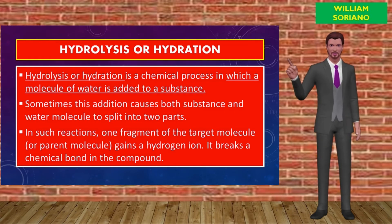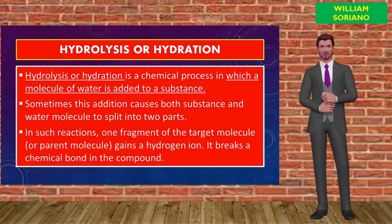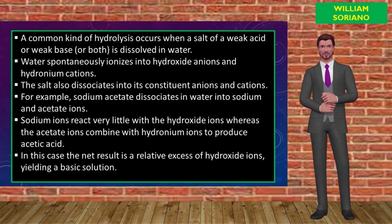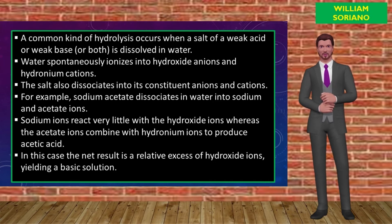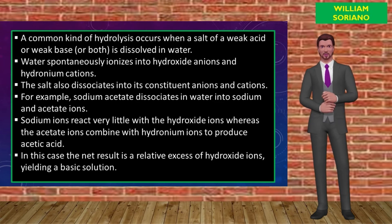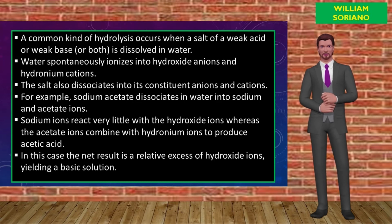Hydrolysis or hydration is a chemical process in which a molecule of water is added to a substance, sometimes causing both the substance and the water molecule to split into two parts. One fragment of the target molecule gains a hydrogen ion, breaking a chemical bond in the compound. A common kind of hydrolysis occurs when a salt of a weak acid or weak base is dissolved in water, which ionizes into hydroxide anions and hydronium cations. For example, sodium acetate dissociates in water into sodium and acetate ions; the acetate ions combine with hydronium ions to produce acetic acid, resulting in a relative excess of hydroxide ions and a basic solution.